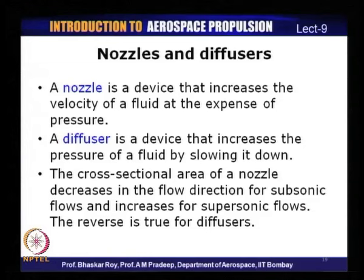Flows with a Mach number less than 1 are known as subsonic flows, and those with a Mach number greater than 1 are supersonic flows — we will define this more precisely later when discussing compressible flows. A nozzle in subsonic flow has decreasing area in the flow direction and increasing area in supersonic flow; the reverse is true for a diffuser. Nozzles and diffusers cause large changes in fluid velocities and therefore large changes in the kinetic energy of the fluid.